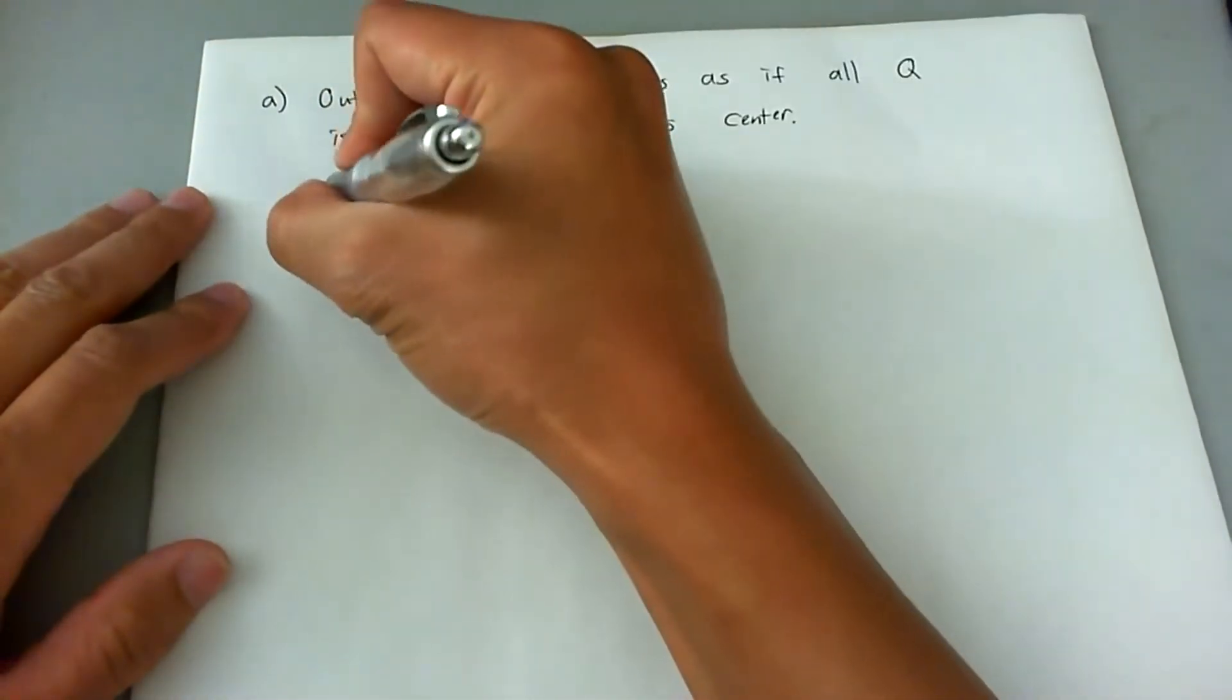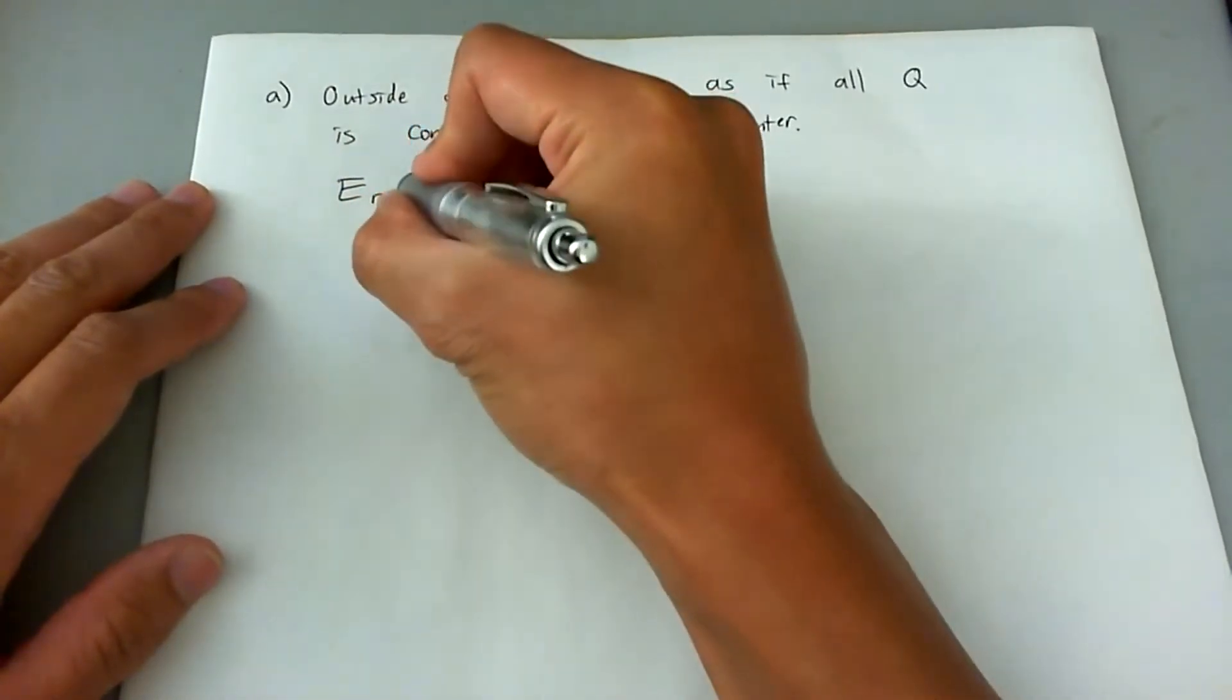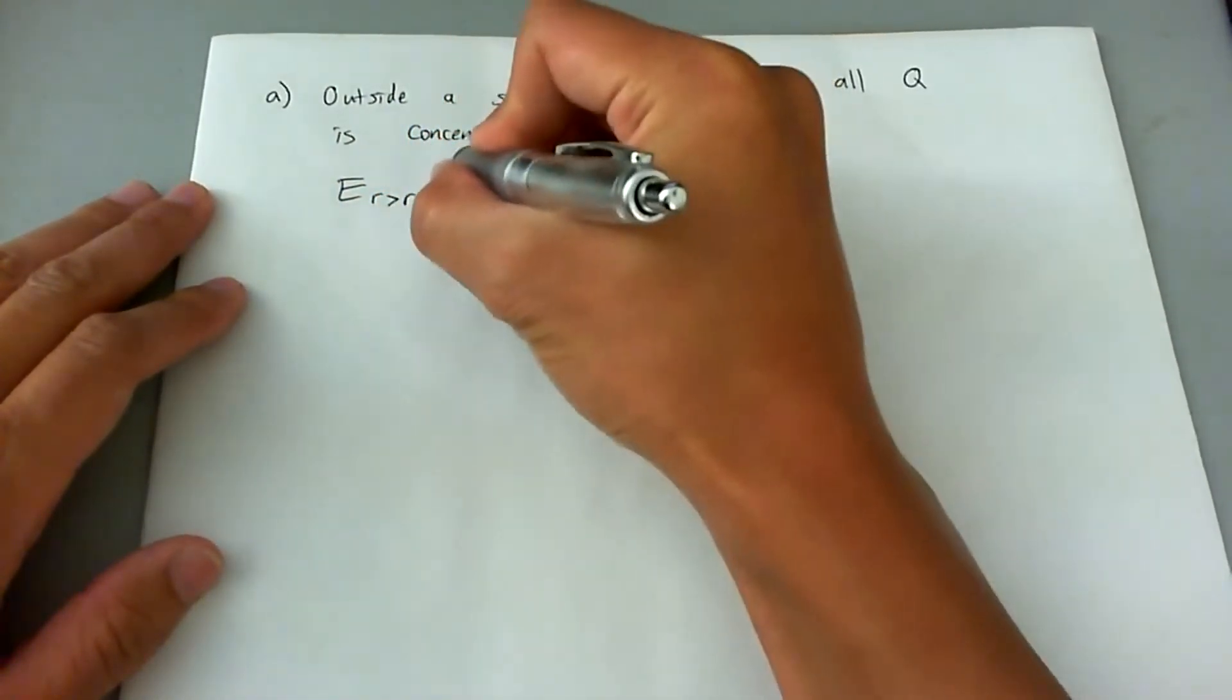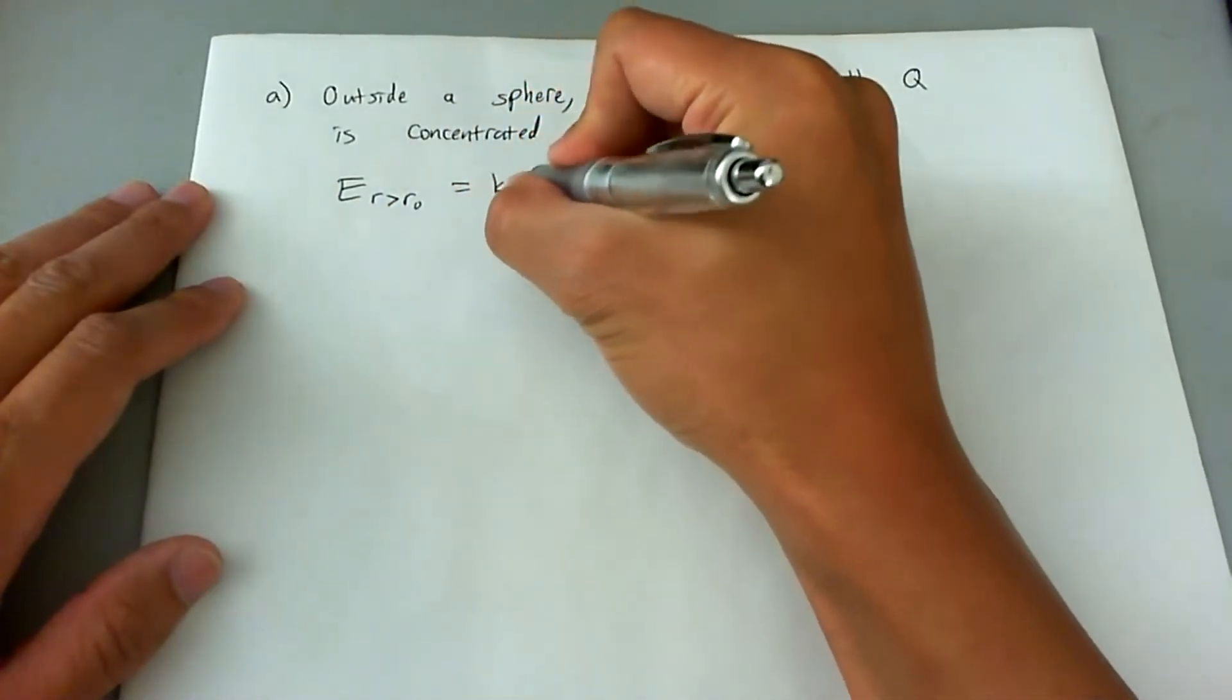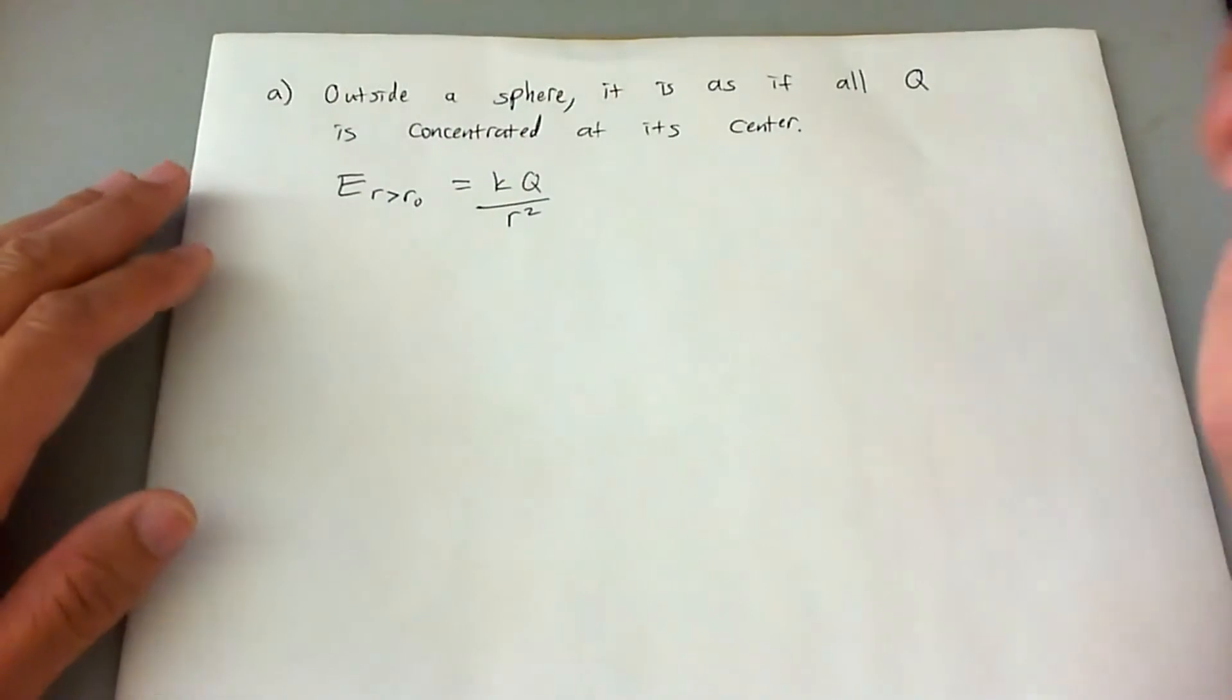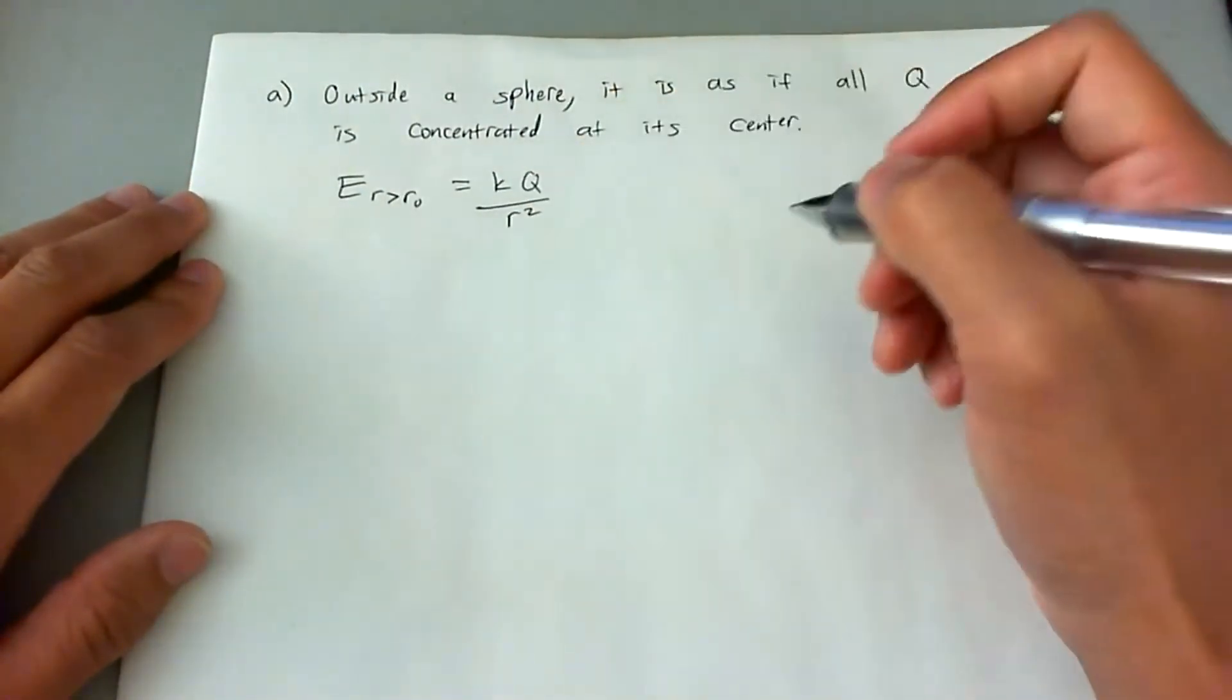That being said, we can write the E field equation for r greater than the radius of the sphere to be kQ over r squared, which is just the simple equation of a point charge, the E field of a point charge.